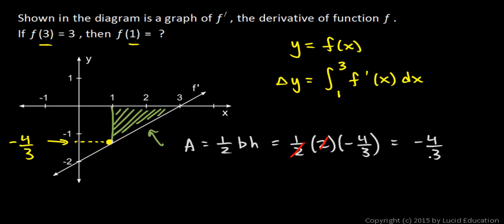That number, that's the change in y from 1 to 3. And then just realize what that means as far as what's implied for this problem. y at 1 plus my change in y from 1 to 3 will have to be my y value at 3. And we know the y value at 3, that's given as 3. And we just found the change in y from 1 to 3. That's negative 4 thirds.